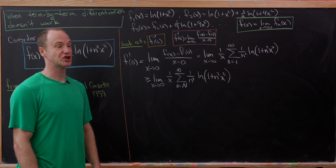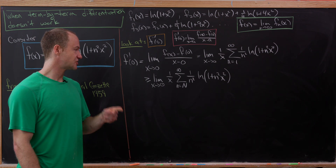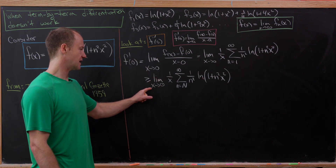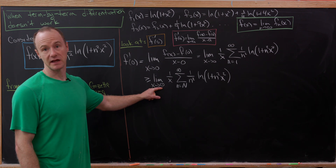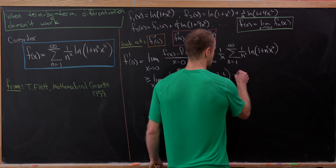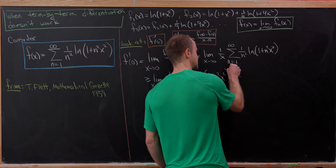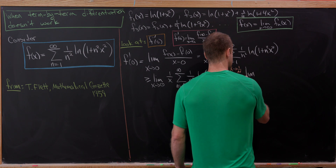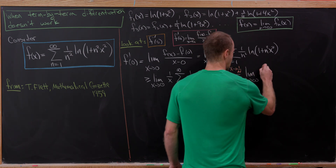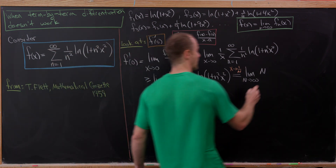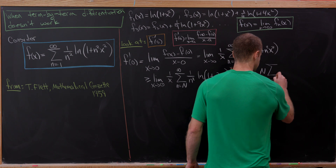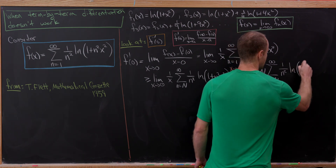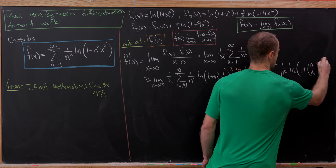Now we do a change of variables in our limit, setting x equal to 1 over N. If x equals 1 over N and x is approaching 0, then capital N must approach infinity. Making that substitution, we have the limit as capital N goes to infinity of capital N — from the 1 over x term — times the sum as little n goes from capital N to infinity of 1 over little n squared times the natural log of 1 plus (n over N) squared.